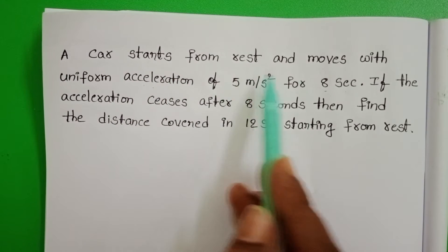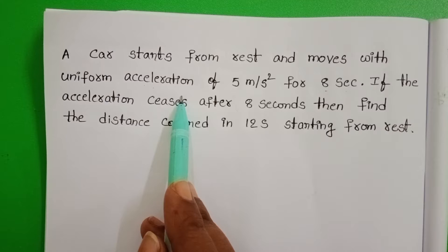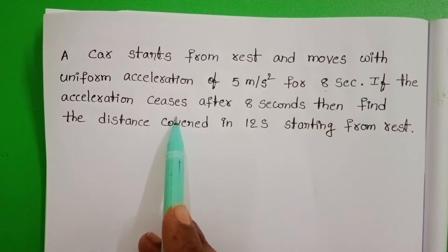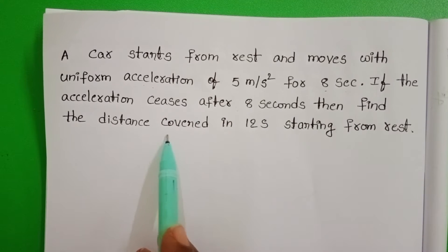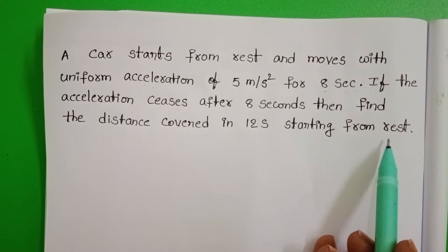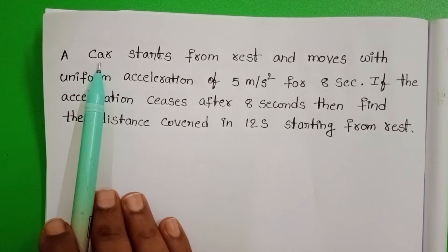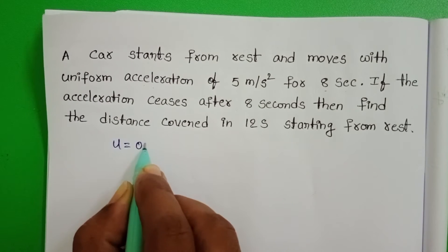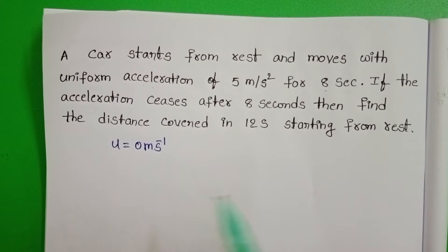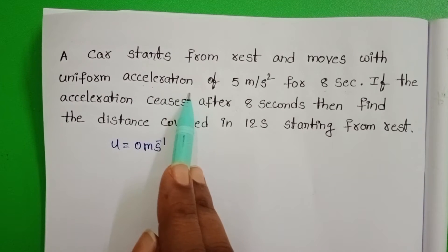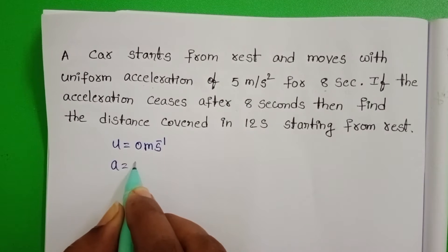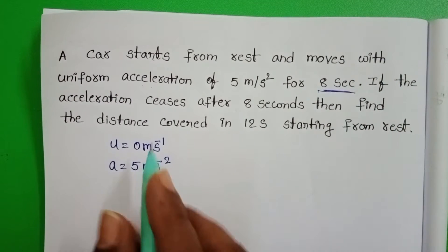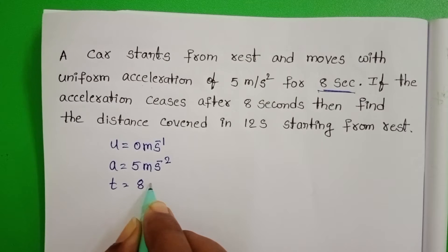A car starts from rest and moves with uniform acceleration of 5 meters per second squared for 8 seconds. If the acceleration ceases after 8 seconds, find the distance covered in 12 seconds starting from rest. Initially, the car starts from rest, so the initial velocity is 0 meters per second, acceleration is 5 meters per second squared, and this acceleration acts only for 8 seconds.